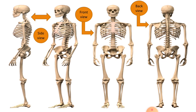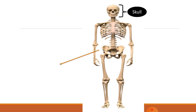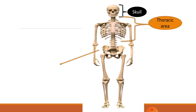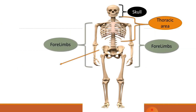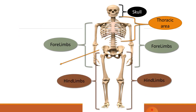Let us see the variety of views of the skeleton. The first two show the side view, the third shows the front view, and the last is the backward view. The areas of the human skeleton are: the skull, the thoracic area (also called the thoracic cavity), the forelimbs or forearms, the hind limbs or hind arms, and the internal middle area, which is the pelvis area, also known as the pelvic girdle.